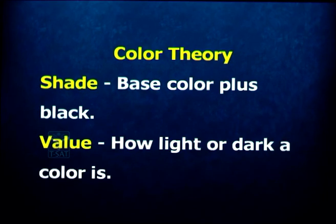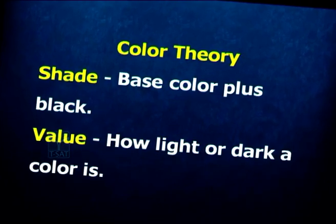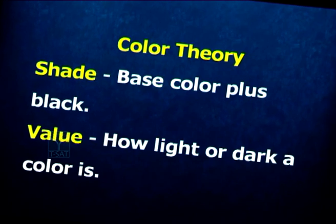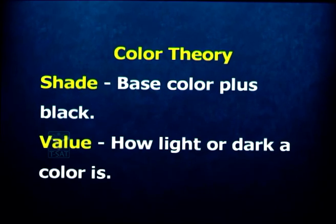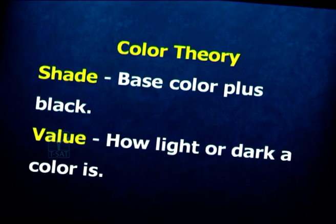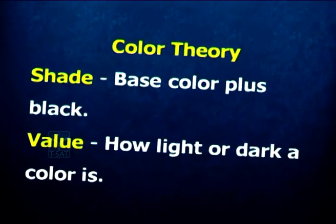Another aspect is shade. You get shade when you mix black to any color. If you mix a little black to red, you get maroon — a shade of red. You get any shade of any color by mixing black. Another aspect is value — how light or dark a color is. The value of a color is defined by its lightness or darkness, and is linked to the idea of hue.